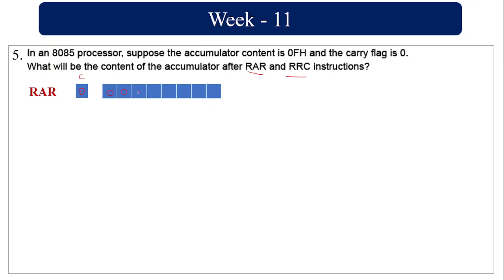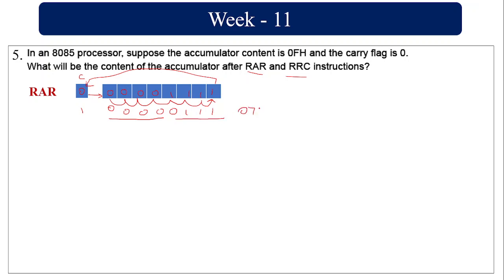The accumulator holds 0000 1111. RAR is Rotate Accumulator Right through carry — the LSB goes to carry, the existing carry bit shifts into the MSB, and each bit shifts one position right. So this one in the LSB will be shifted to your carry, and zero becomes the MSB of your accumulator.